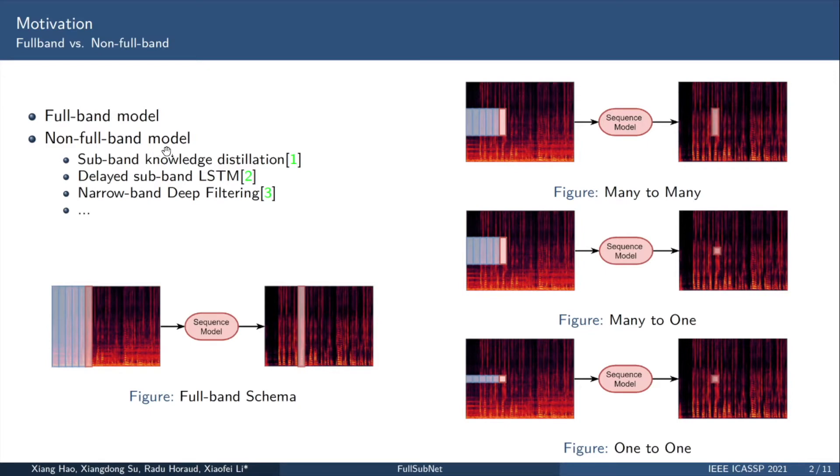In this paper, we talk about non-full-band models. So what is the non-full-band model? On the right side of the screen, we list the three typical non-full-band models. First, we show a many-to-many model from sub-band features to sub-band features. The input of this model is the time frequency point in a certain frequency range. In actual scenario, we will use some historical information to improve performance.